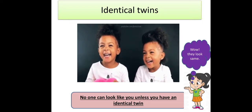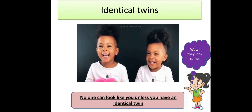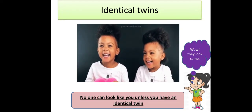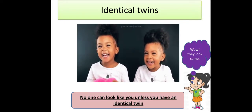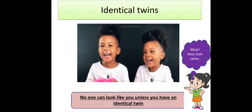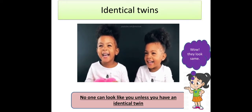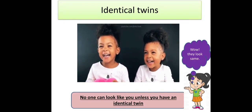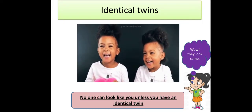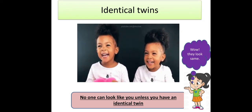No one can look like you unless you have an identical twin. If you look at yourself in the mirror, you look completely different from your own family members. Maybe you might resemble in a few features, but your face is different from your siblings, your parents, your relatives, or anybody in this world. These two cute girls are twins — some babies can be born at the same time; those are called twins. And identical twins look very similar. Unless you have an identical twin, you will not have somebody who looks the same as you. Our faces are different.